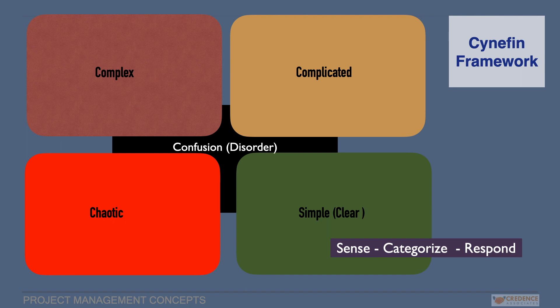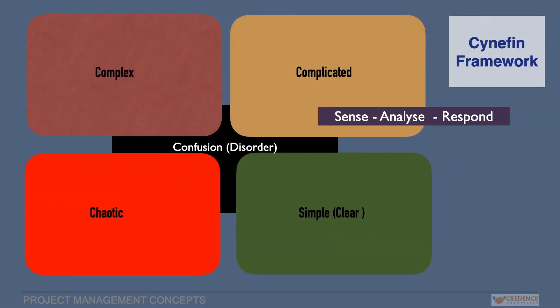The complicated domain represents known unknowns. The relationship between cause and effect requires expertise or analysis. For a particular problem, there is a range of right answers. The framework recommends sense-analyze-respond to chose the best for the situation. Levels of risk is low-moderate.